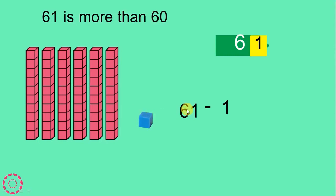61 subtract 1: 1 subtract 1 equals 0, 60 subtract 0 equals 60. We have 60.